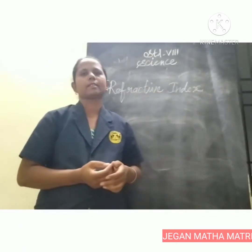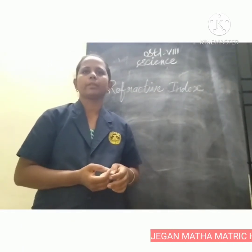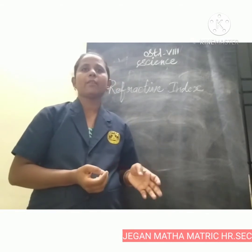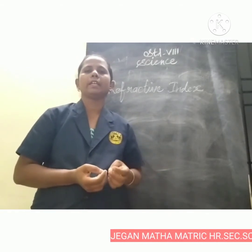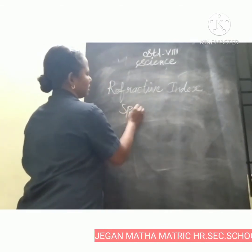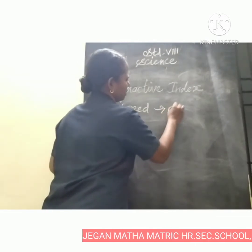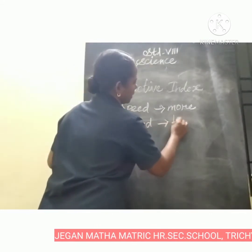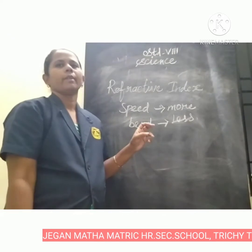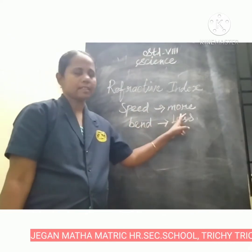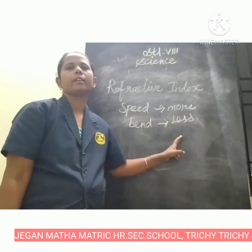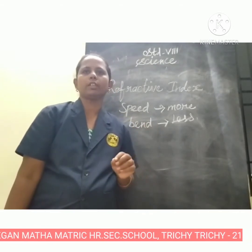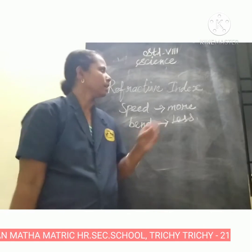Topic: refractive index. Refraction of light in a medium depends on the speed of light in that medium. When the speed of light in a medium is more, the bending is less. When the speed of light is less, the bending is more. The total amount of refraction of light in a medium is denoted by the term known as refractive index.